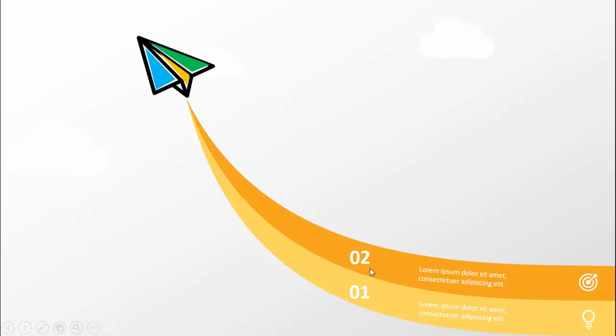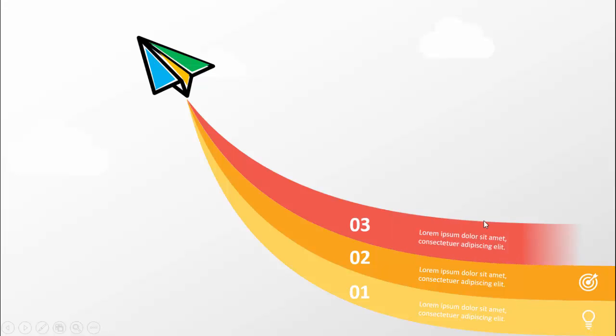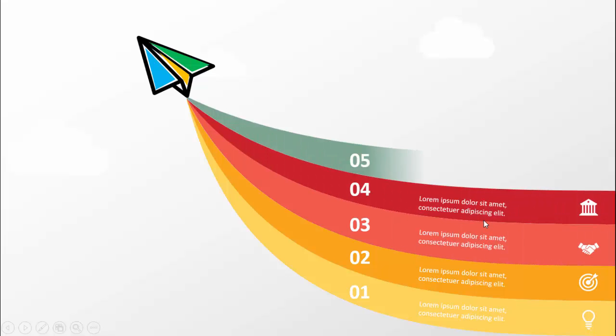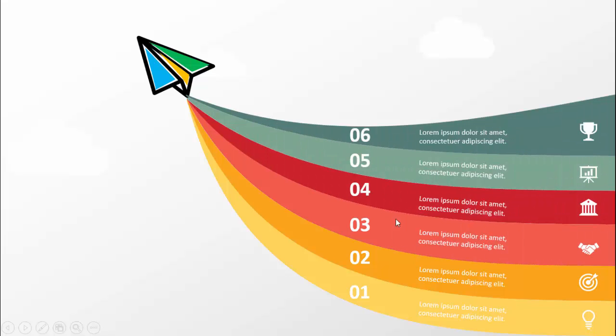In today's tutorial, I'm going to show you how to create a paper plane with six options infographic slide in PowerPoint. When I click, you can see a colorful paper plane comes flying from the bottom right, then it shows the first option — a curve design where you can put the option number and detailed text along with the icon. When I click again, it shows different color combinations for the second, third, fourth, fifth, and sixth options.